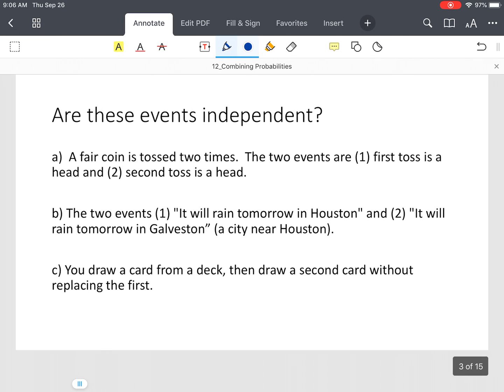Alright, so some quick examples. Now, we're not finding probabilities. We're just trying to determine whether these events are independent. So let's say we toss a coin twice and we call it a fair coin, meaning it's not loaded either on head side or the tail side. That's what you call a fair coin. So the two events you have, the first toss is a head and the second toss is a head. Again, the coin is fair. So that means that after your first toss that has no impact on the second toss. So this will be called an independent event.